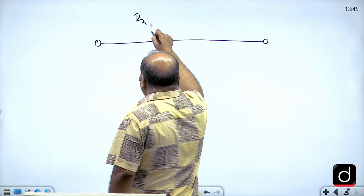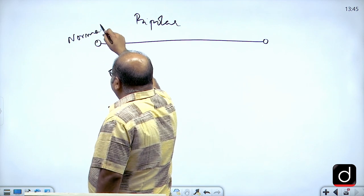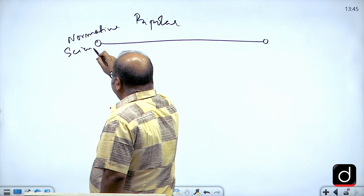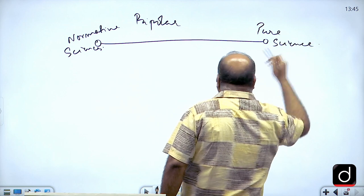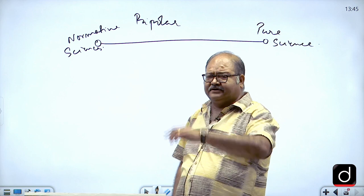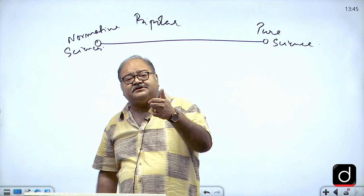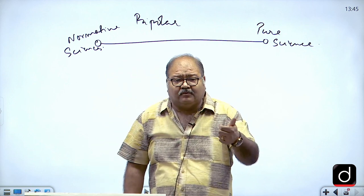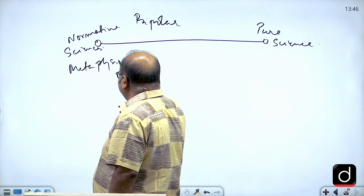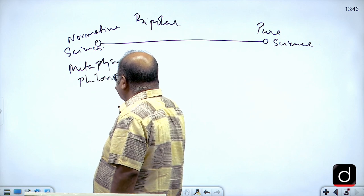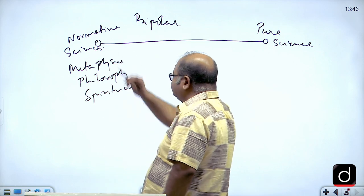Suppose this is a bipolar continuum of sciences — I keep normative sciences at one end and pure sciences on the other. Normative sciences are those that deal with basic questions of life like what one should do, what one ought to do. Subjects like metaphysics, philosophy, and spirituality lie at the normative sciences end.